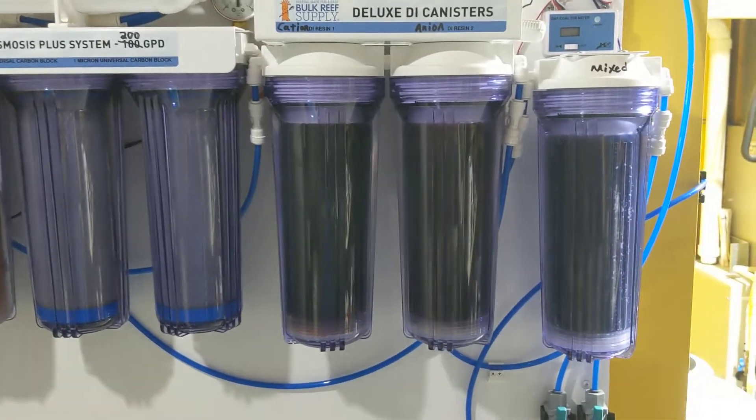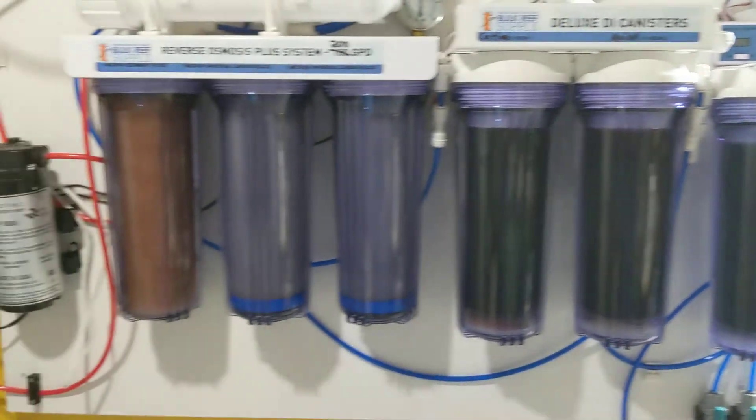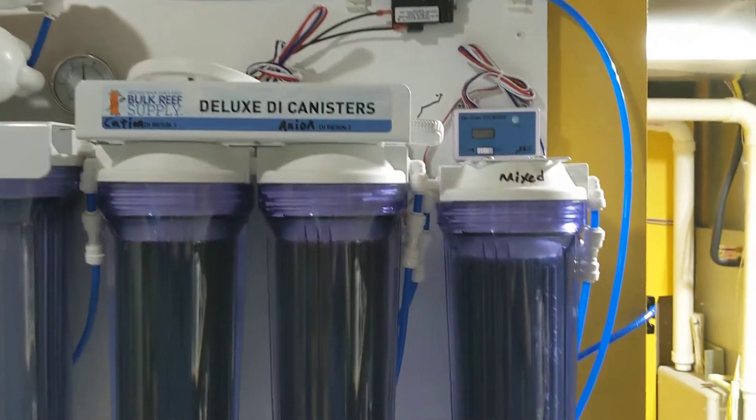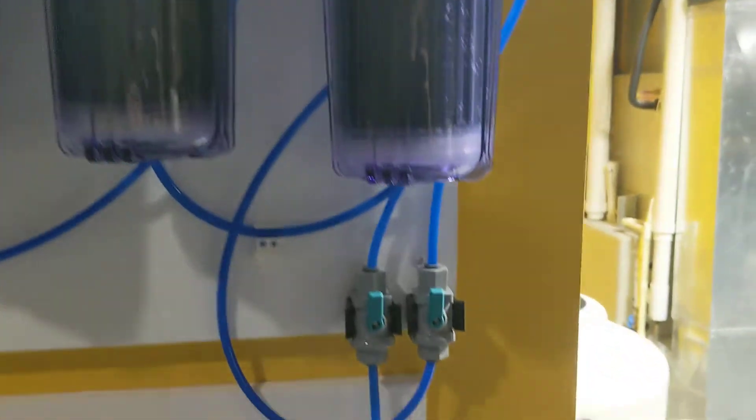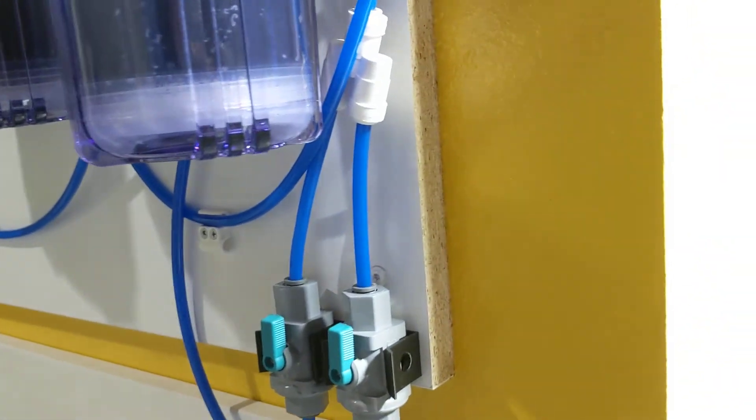So I have a cation, anion, and then a mixed bed at the end here. And it just eats through the anion. But I've got a booster pump, pressure switch, and then down here I have a couple valves coming off the splitter.